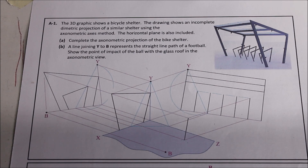The horizontal plane is also included, so: complete the axiometric projection of the bike shelter, and then a line joining Y to B represents a straight line path of the football. Show the point of impact of the ball with the glass roof in the axiometric view.